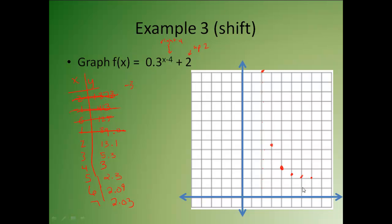Now notice this time, my values are starting to level out, not down here by y equals 0, but they're up here by the line y equals 2. And that's because I had a vertical shift of up 2. So my horizontal line this time is y equals 2. Then I can connect them. And I have my graph.